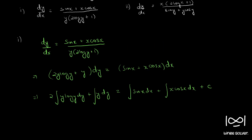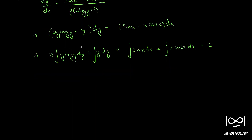We have four integrals and two of them are in product-of-function form. y log y has y and log y as two functions in product form, and similarly x cos x is a product of two functions. These two integrals we can solve by using integration by parts.